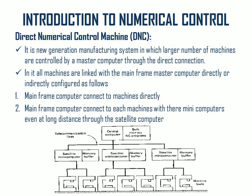The next evolutionary stage of numerical control machines is the direct numerical control machine, or DNC machine. It is a new generation manufacturing system in which a large number of machines are controlled by a master computer through direct connection or through satellite. All machines are linked with the mainframe master computer directly or indirectly, configured in two main configurations.